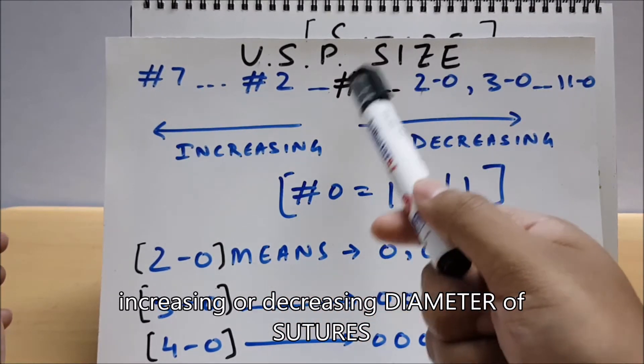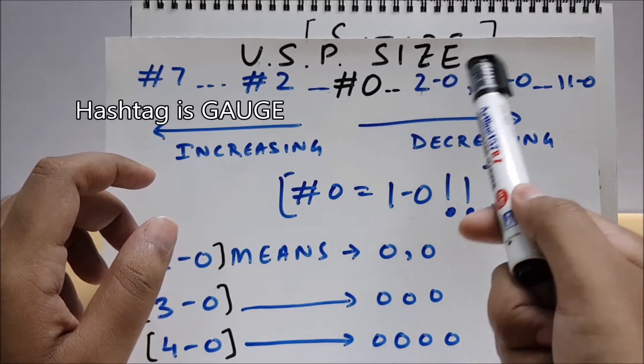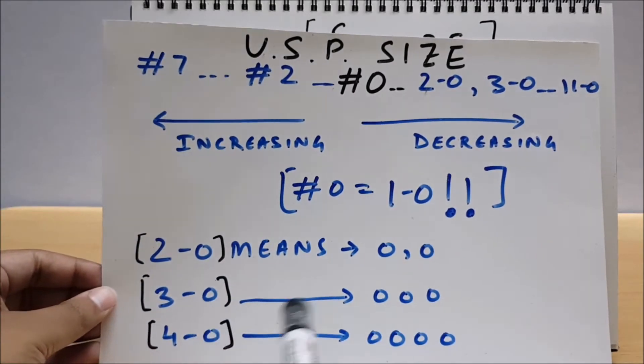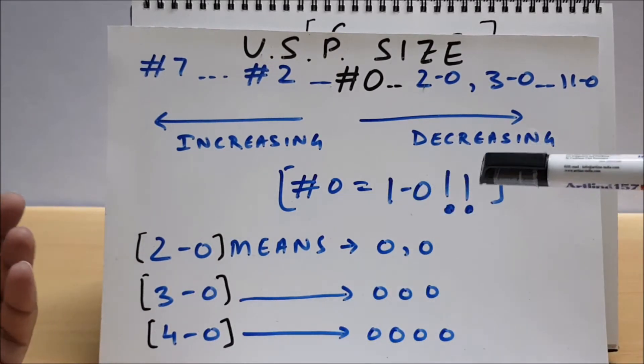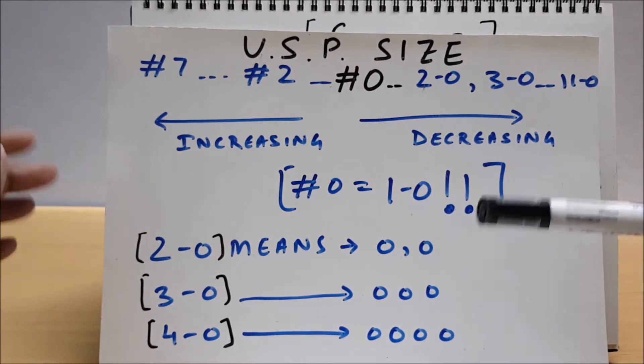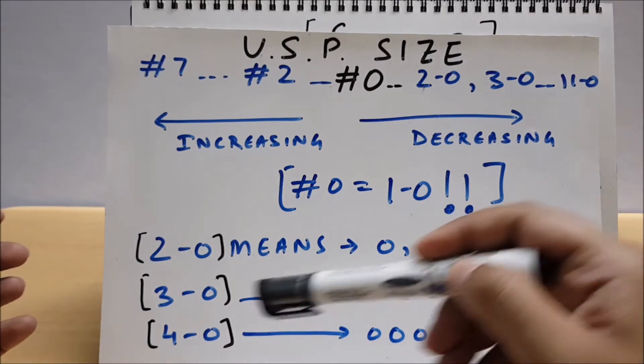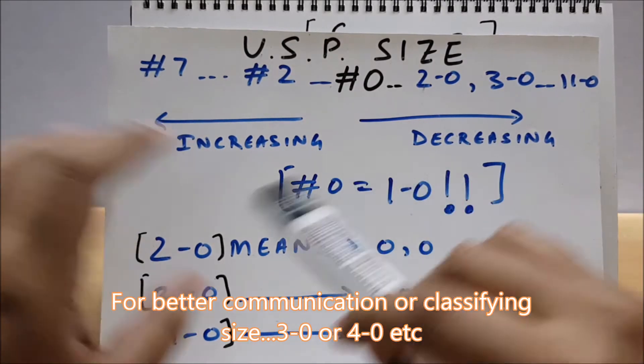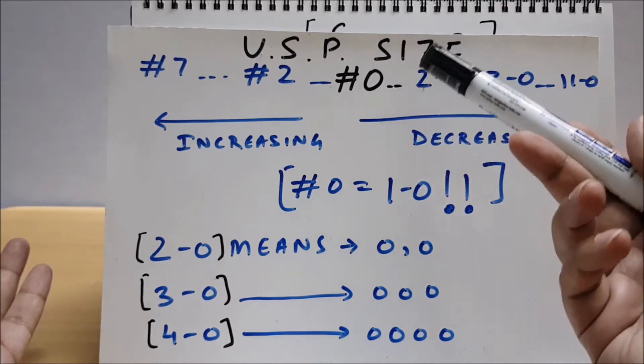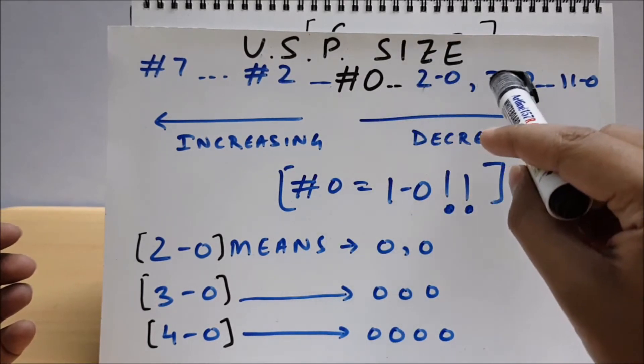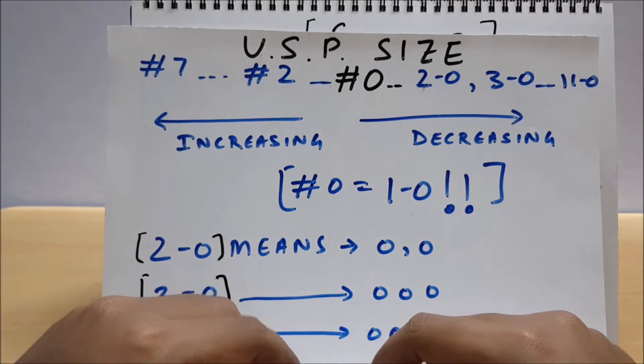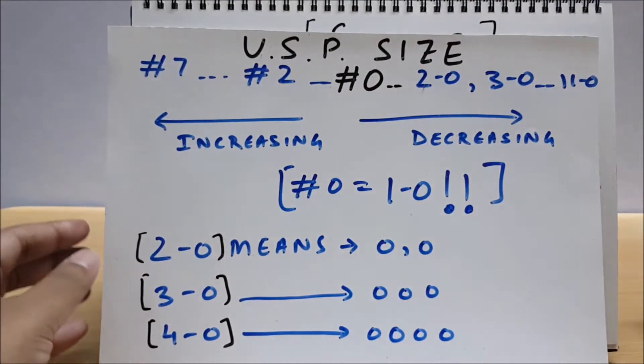But as we go after this hashtag 0, you will see that the size is decreasing. Why is the size decreasing? Like you can see here, 2-0 means double 0, 3-0 means three times 0. So that's why we say 3-0. It means we are decreasing by unit - it doesn't mean literally a unit decrease, but it denotes that we are decreasing the size of the diameter. So 3-0, 4-0. And there is nothing like 1-0; it is actually hashtag 0. So after that, directly we have 2-0, then 3-0, decreasing. The 11-0, 10-0 sutures are helpful in microsurgery aspects. These are big sutures.